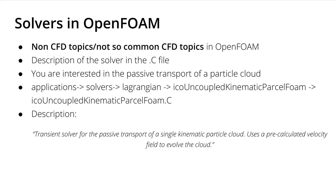For non-common topics, just go into the folder you're interested in. For example, if you're interested in Lagrangian particles, go into applications/solvers/Lagrangian, go through all the sub-folders — for example, icoUncoupledKinematicParcelFoam — and open the .C file. There will always be an official description. For example, that solver is described as a transient solver for the passive transport of a single kinematic particle cloud with a pre-calculated fixed velocity field. You don't have to Google it — just read it in your installation.